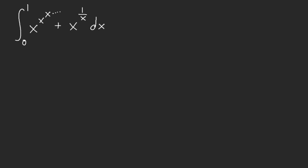So we have this integral here. We have x to the power of x to the power of x, all the way — an infinite tower — and then we randomly have x to the power of 1 over x. So how do we deal with this integral?